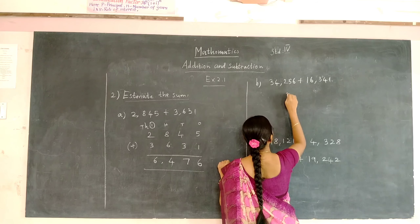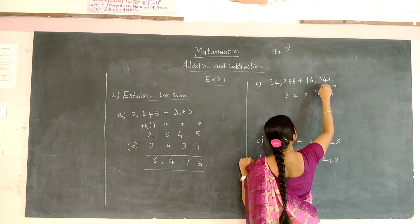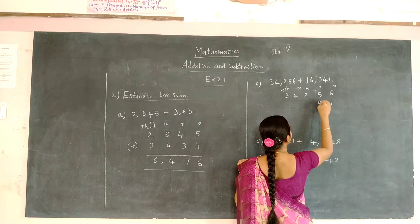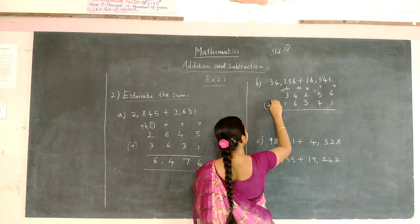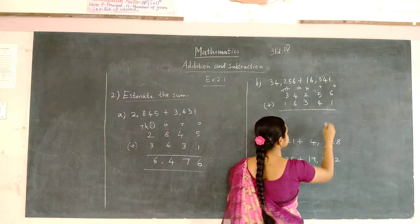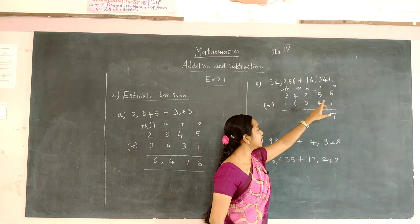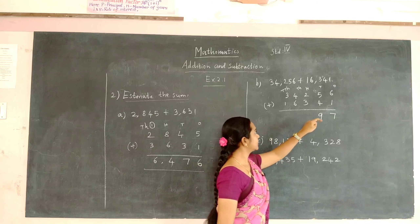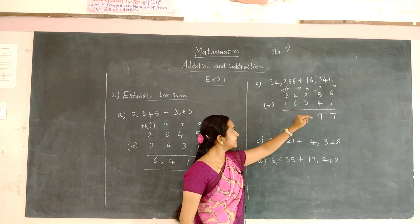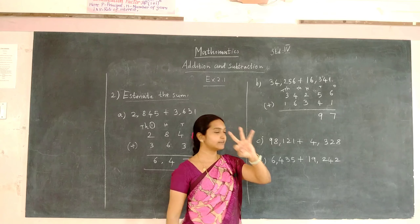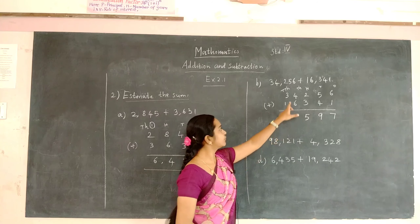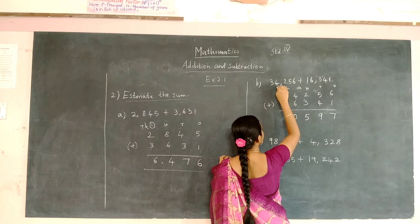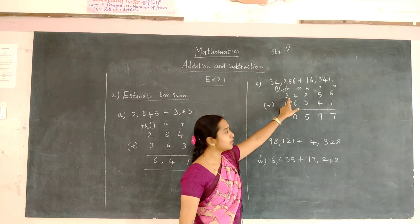Next we are going to add these two numbers. First write the number with the place value: 1, 10, 100, 1000, and 10,000. Start writing the number from the right, that is 1, 4, 3, 6, and 1. 6 plus 1 will be 7. 5 plus 4: that is 6, 7, 8, and 9. You have to add 2 and 3, starting from 3: that is 3, 4, and 5. To 4 we are going to add 6: so 5, 6, 7, 8, 9, and 10. Write 0 here and carry on to the 10,000th place. 3 plus 1 will be 4, and 4 plus 1 will be 5.